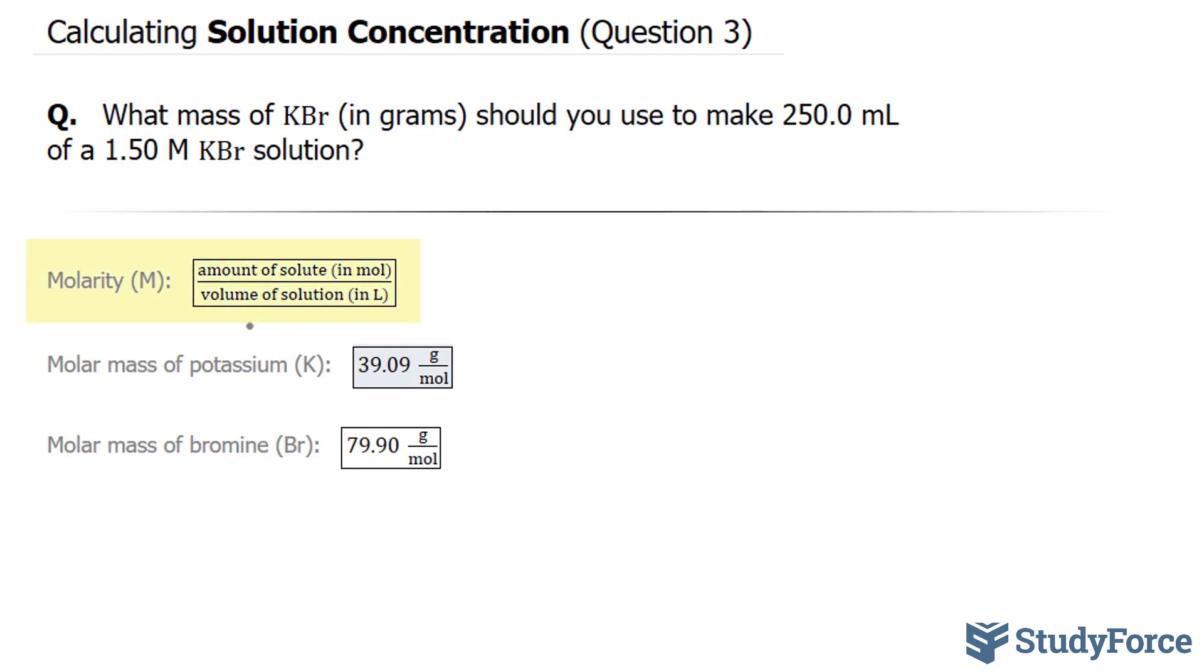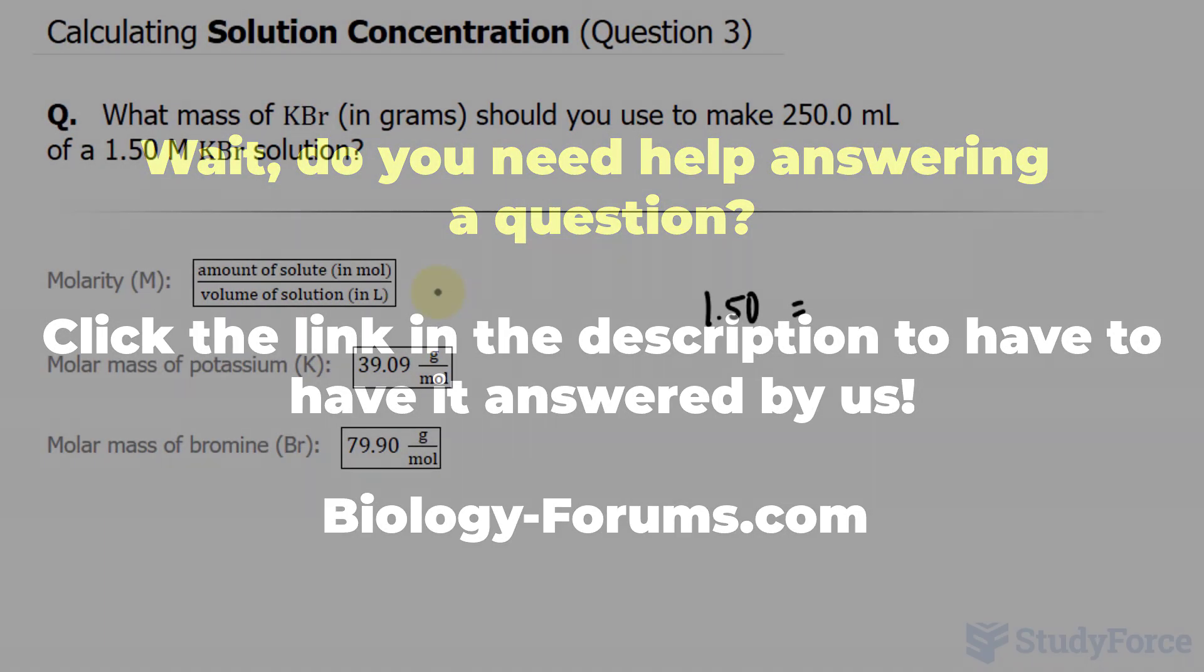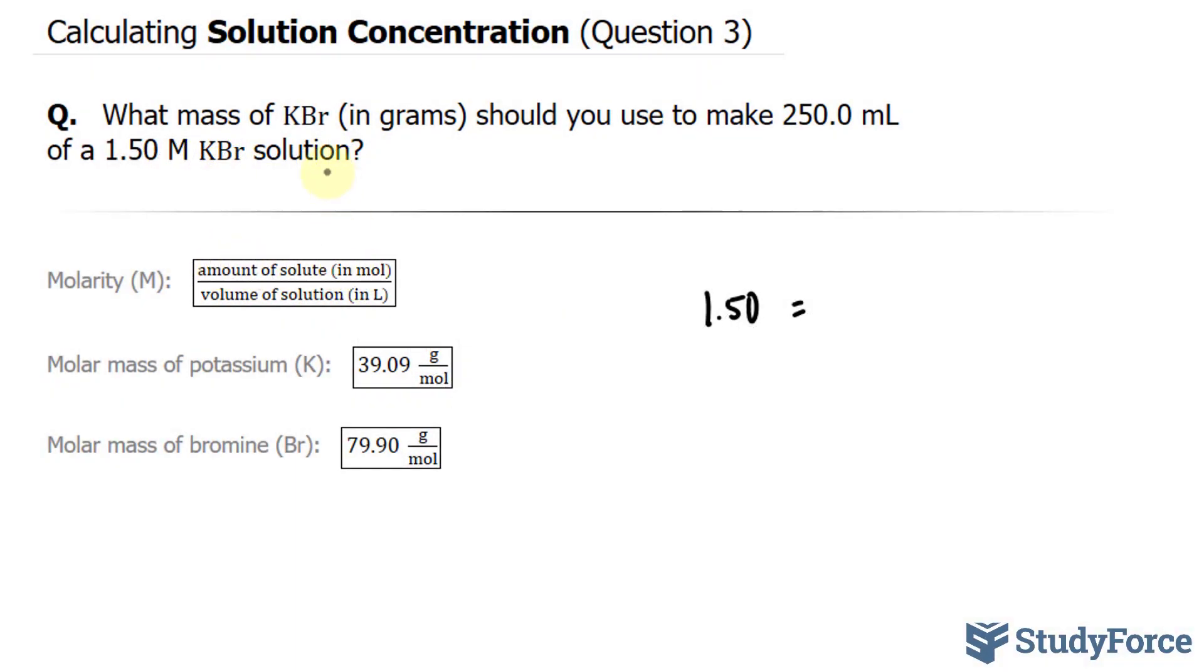I'll use this formula to come up with the number of moles of potassium bromide, and I can do that by setting it up like this, where I have 1.50 is equal to the amount of solute of potassium bromide, which I'll represent with the letter X, it's an unknown, over the volume of the solution. Notice that our volume has been provided in milliliters, so we need to convert this into liters first.